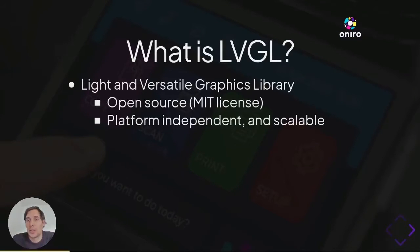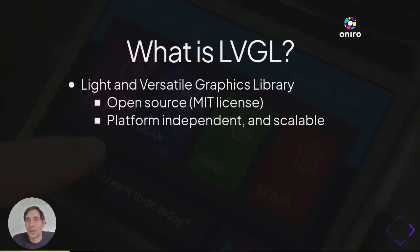LVGL stands for Light and Versatile Graphics Library. It's an open source, MIT-licensed graphics library to easily create modern user interfaces, or UIs for short. LVGL's primary targets are resource-constrained embedded devices, such as smartwatches, smartphones, various instruments, engineering devices, and medical devices.